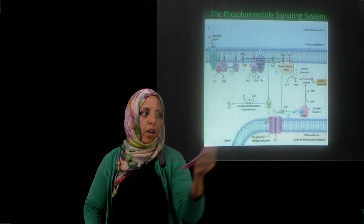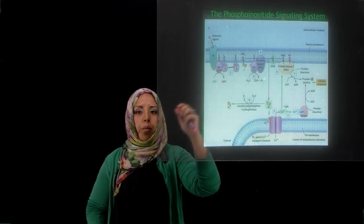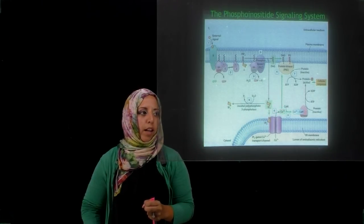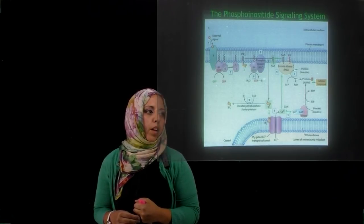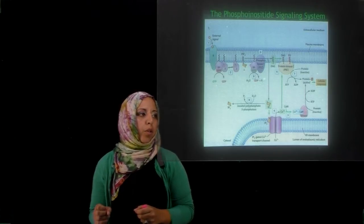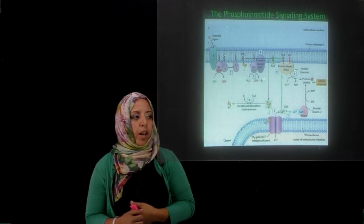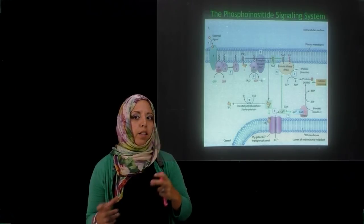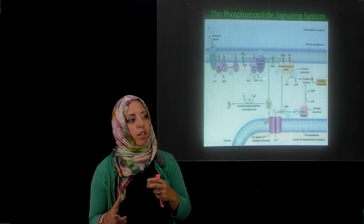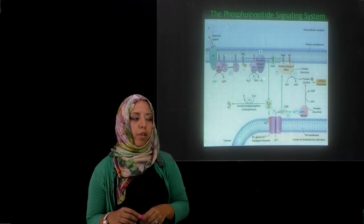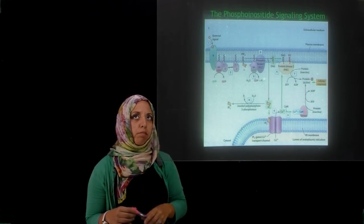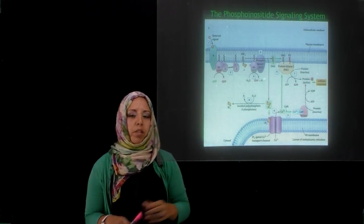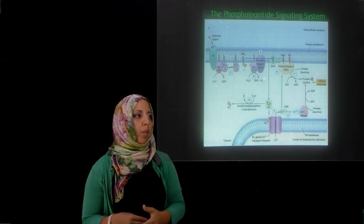When calcium is now in the cytosol, it has two outcomes: either binding to calmodulin, which binds four calcium ions. Once calcium binds to calmodulin, it activates kinases by binding to the regulatory subunit of that kinase, causing conformational changes that cause the regulatory subunit to dissociate from the catalytic subunit — much like protein kinase A. Once that kinase is activated, it will phosphorylate and activate a number of different cellular proteins.